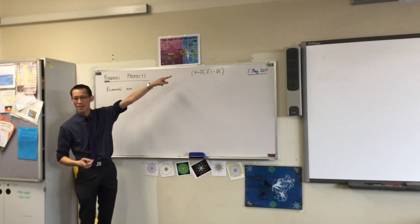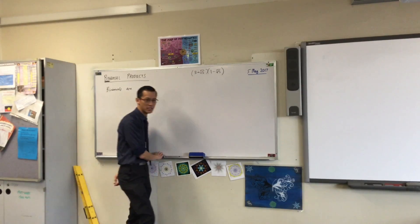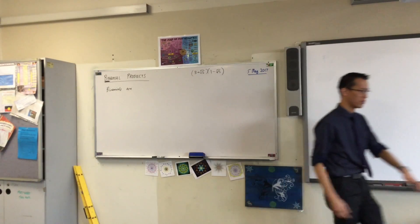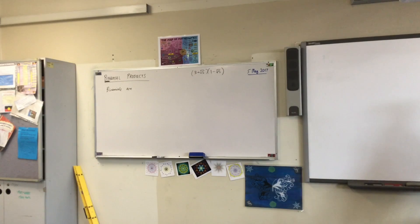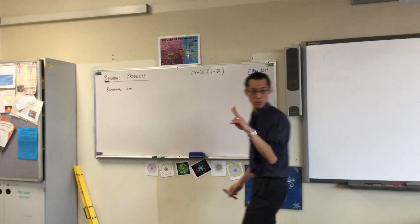In this, which bit is a binomial? Because the whole thing is not a binomial. Which part is a binomial? There are actually two of them. Do you see?